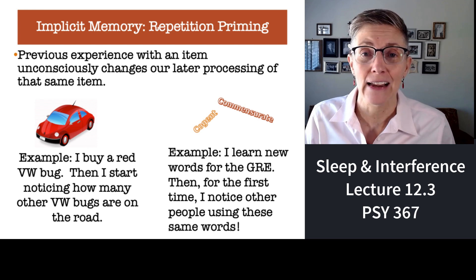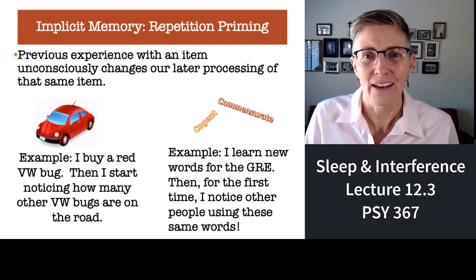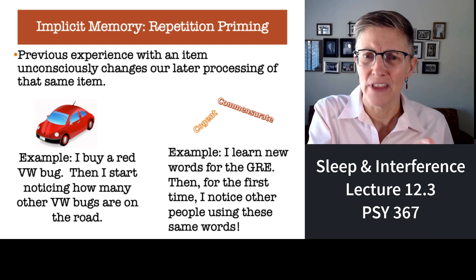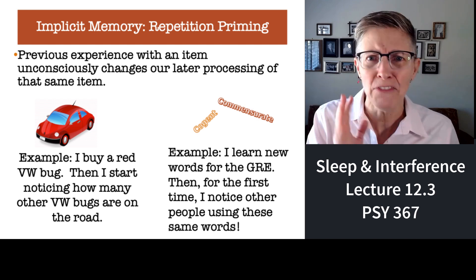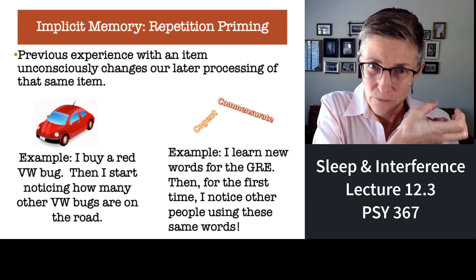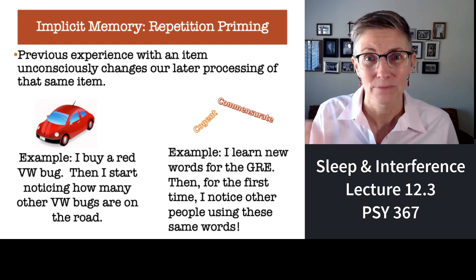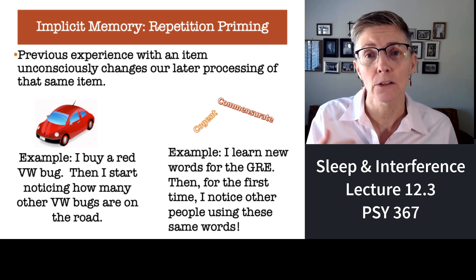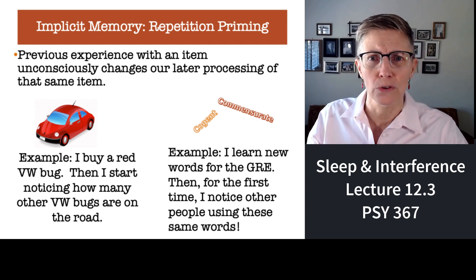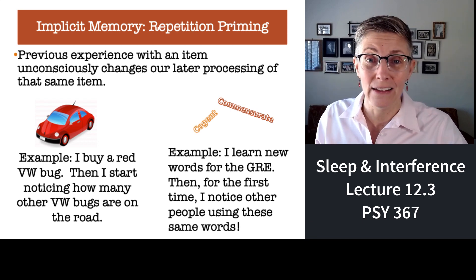Here's one last example of implicit memory — it happens to me once or twice a year. It's called repetition priming. Let's say I'm studying for the GREs and I learn a new word — 'plethora,' meaning a lot of stuff. I go about my day and I must hear that word two or three times. I just learned it this morning and now I've heard it twice in one day — I've never heard that word before in my life! Actually, you have — you just didn't pay attention to it. Learning the word this morning makes it easier to recognize other people using it later in the day. Maybe you bought a unique t-shirt or tennis shoes, put them on, go about your day, and you realize there are two people on campus with the same shoes you've never seen before.